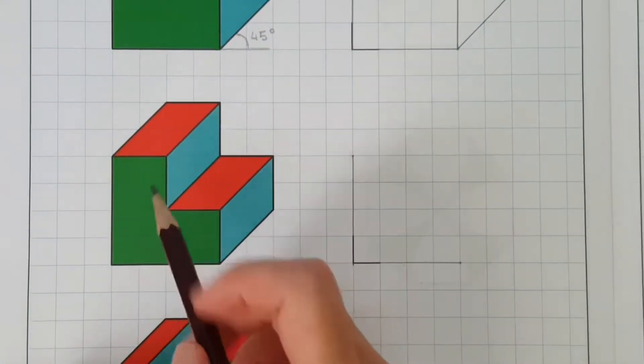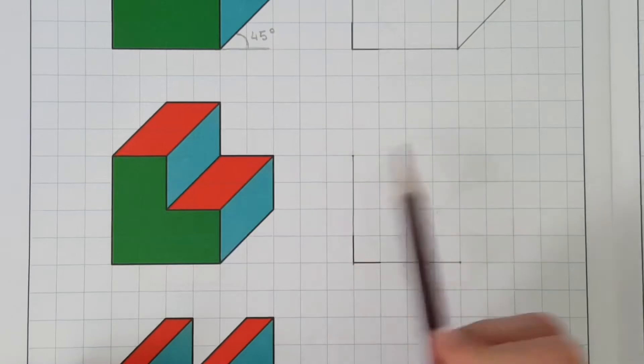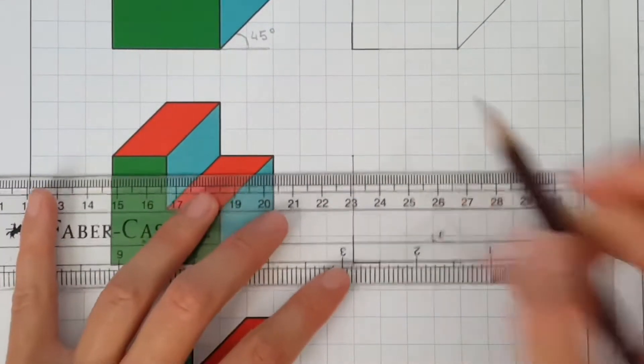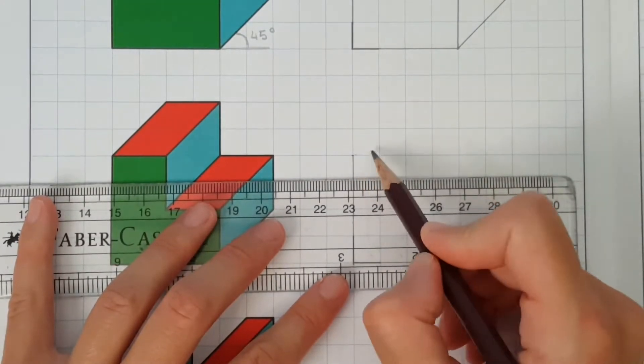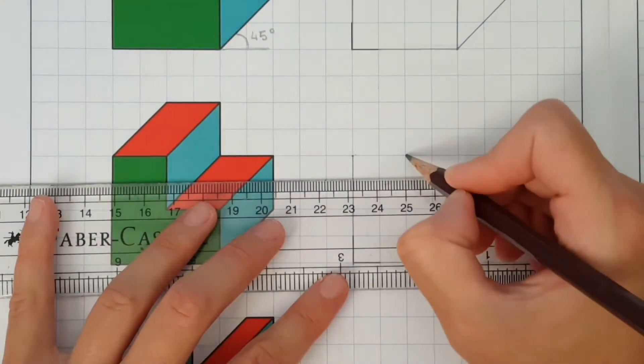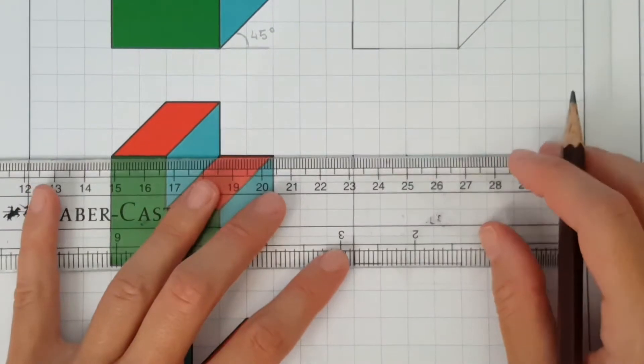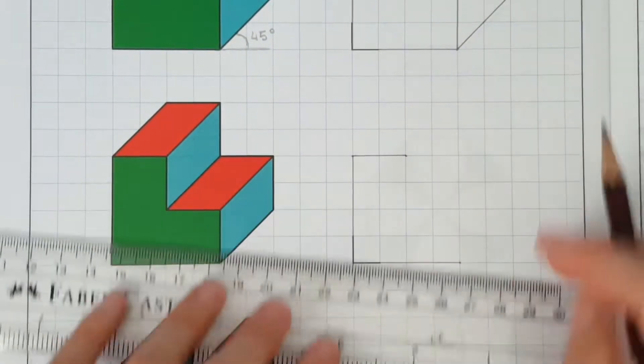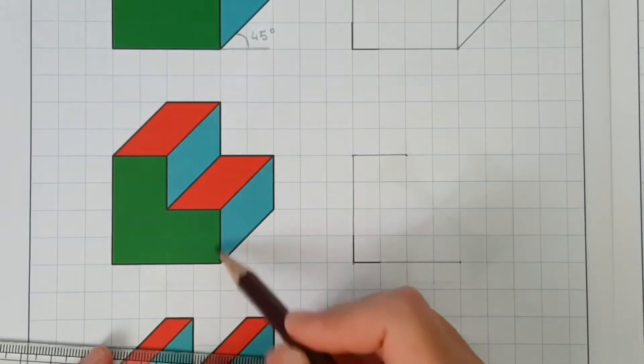Now let's draw this upper horizontal line. This line is 1, 2, 2 squares to the right. Now remember that at this stage, we are using only construction lines. So always keep these lines as light as possible.